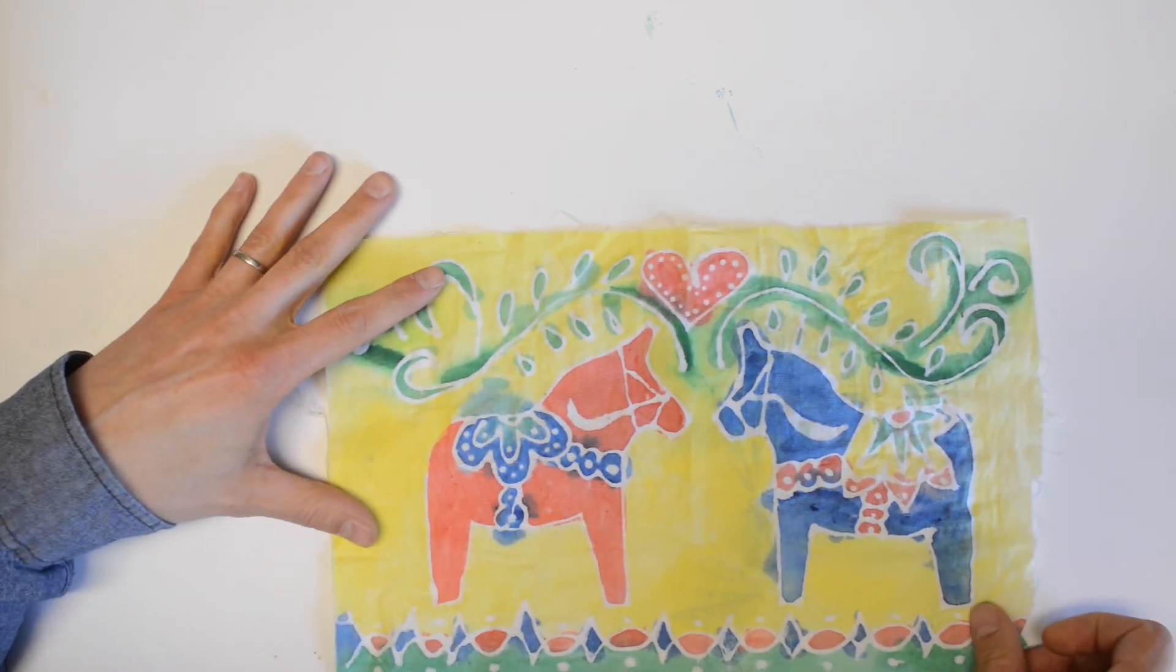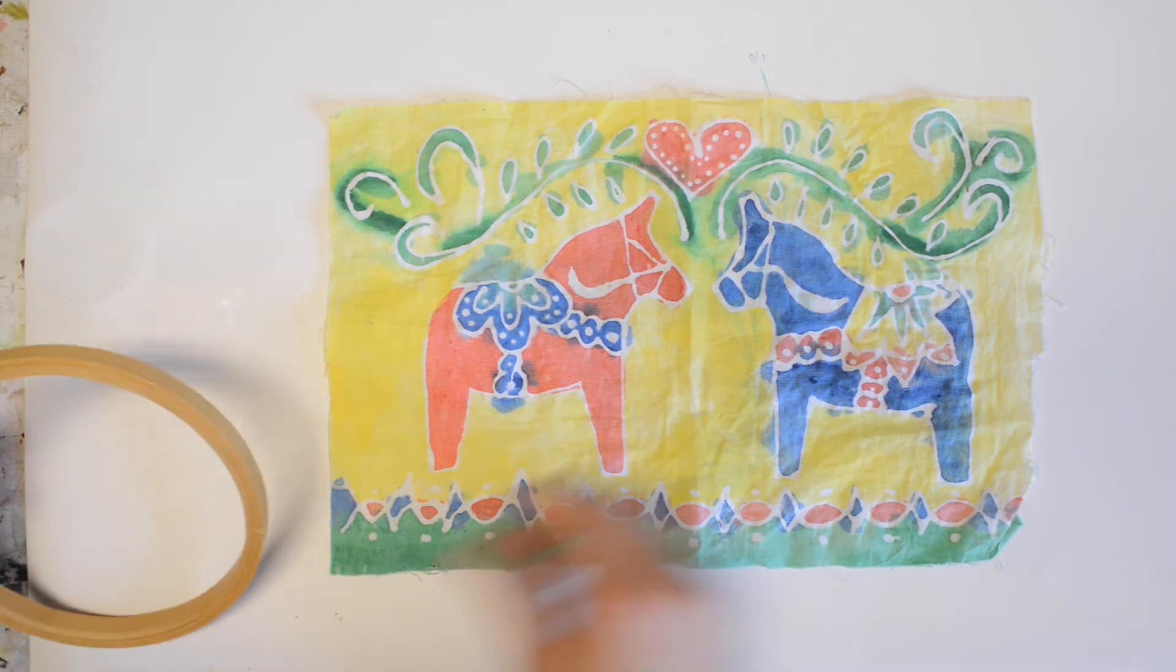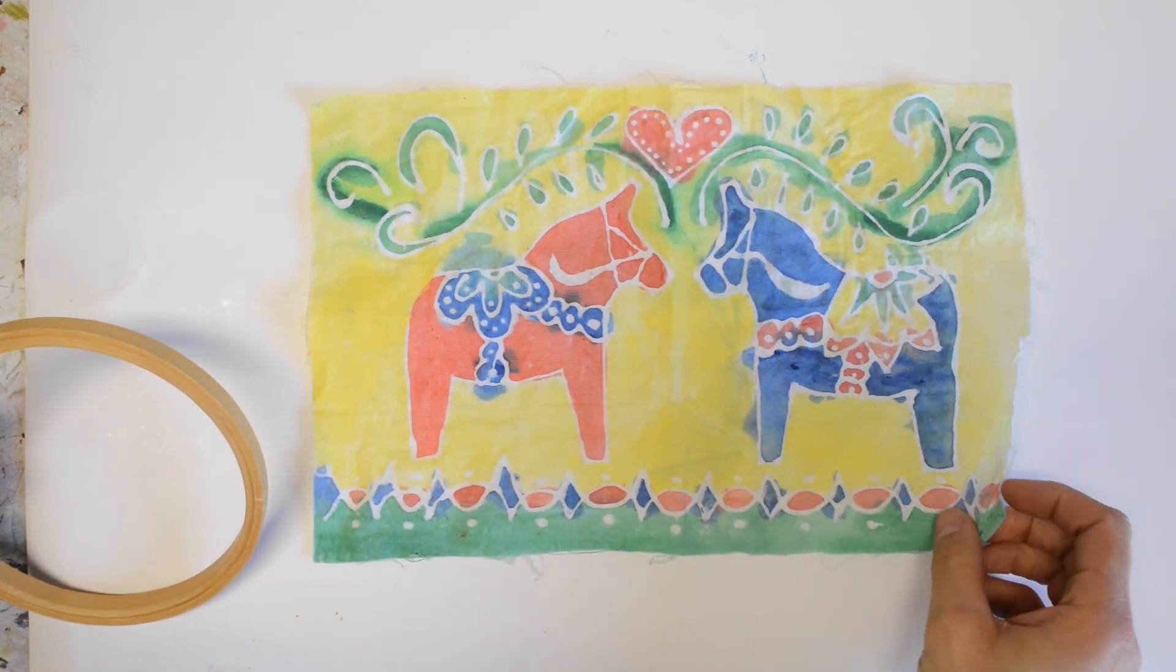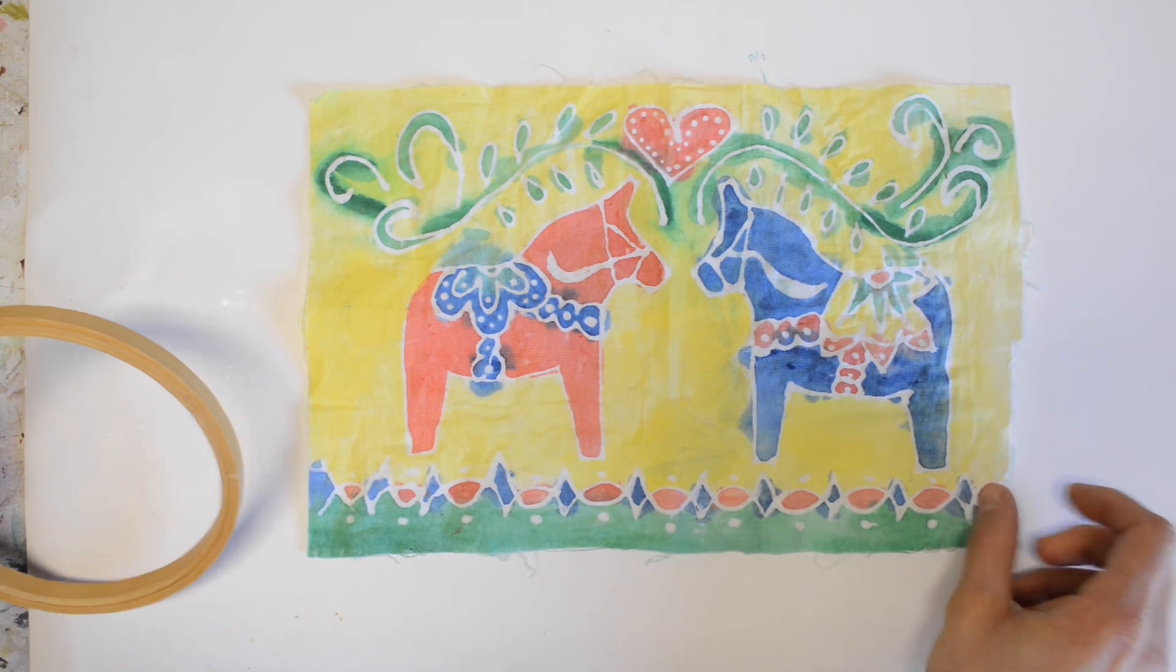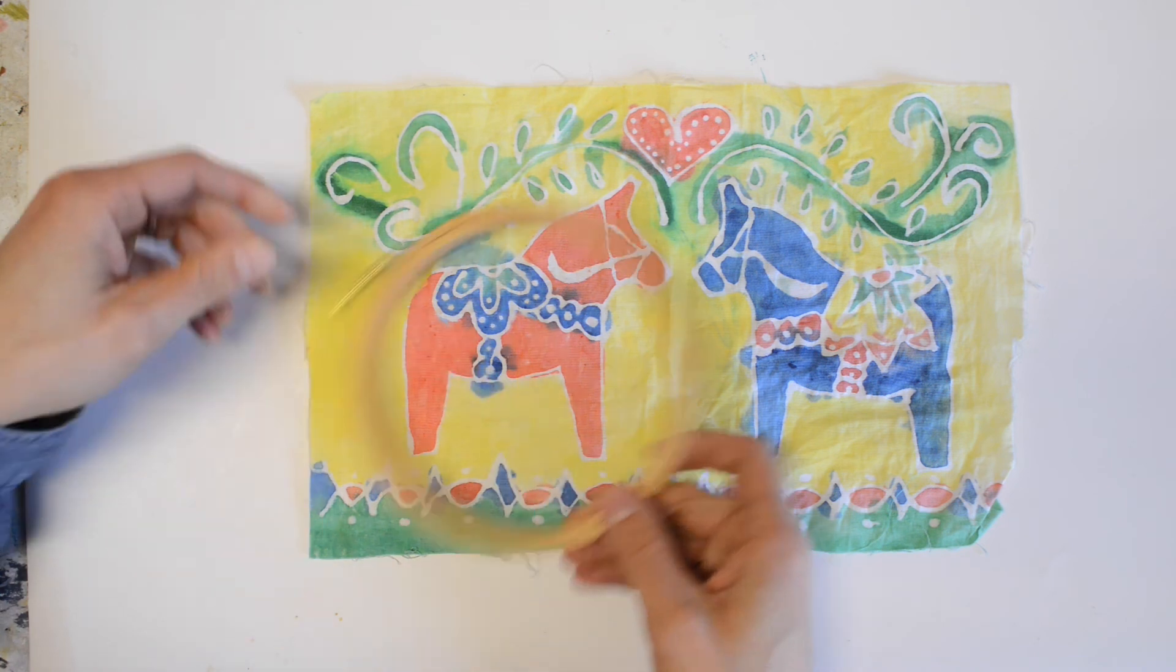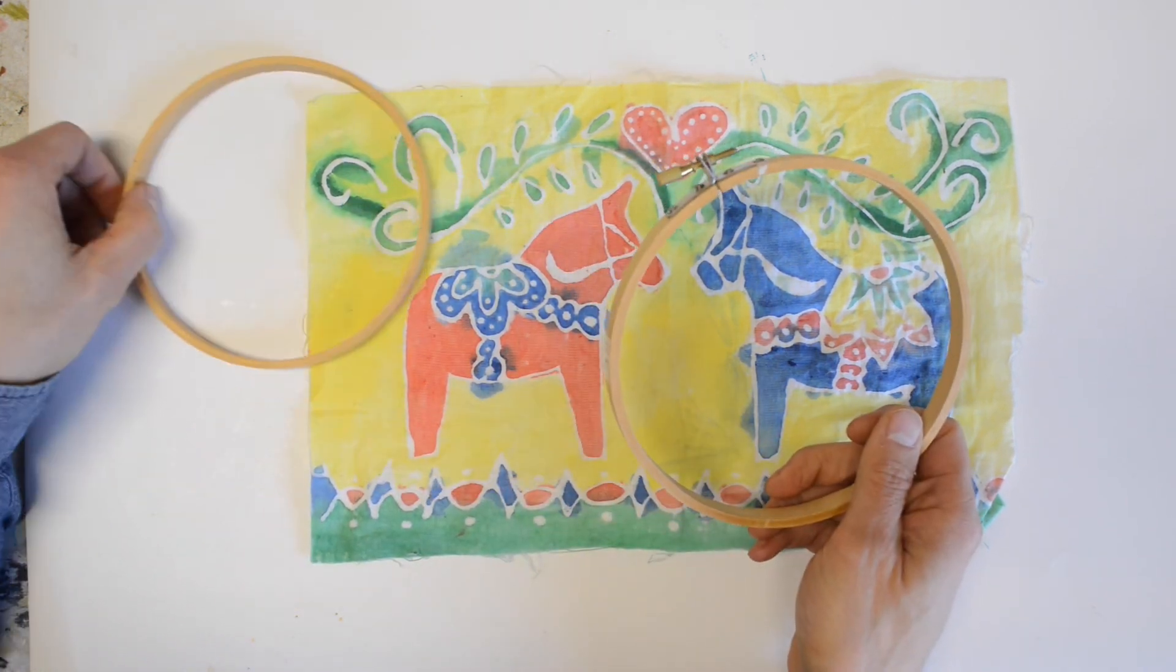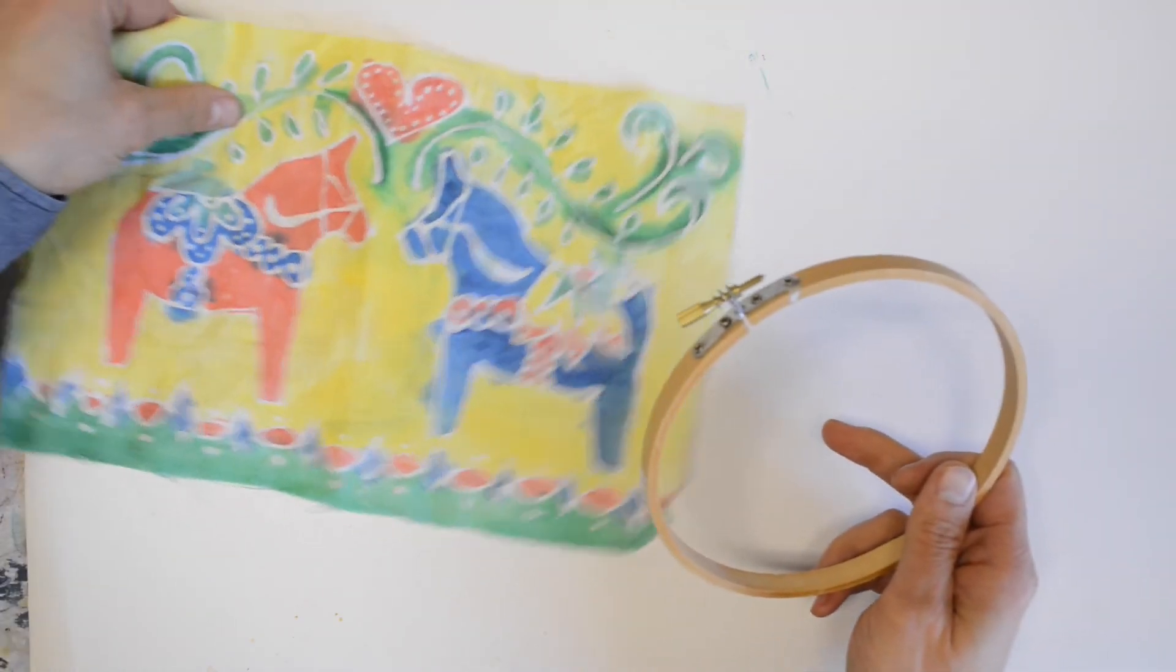When you've completed your batik, you may be thinking about how do I want to present this or show this. Of course you could frame it up in a frame. You could also because it's fabric, many have chosen to do something like put it on a pillow which could look really sharp. Another idea is to use an embroidery hoop which you may be familiar with.